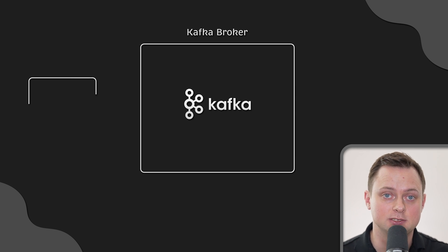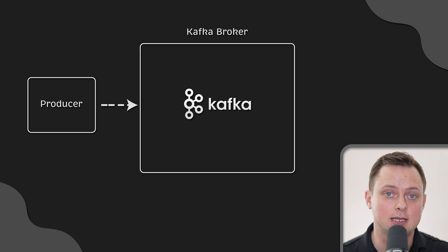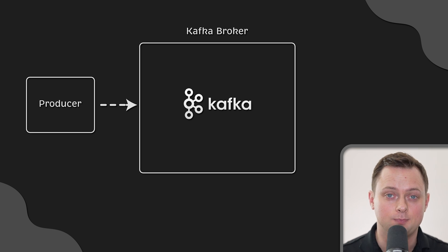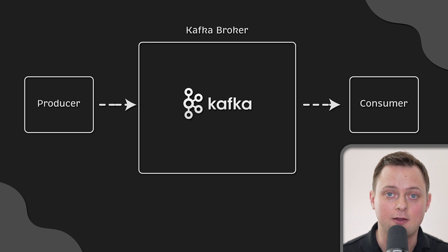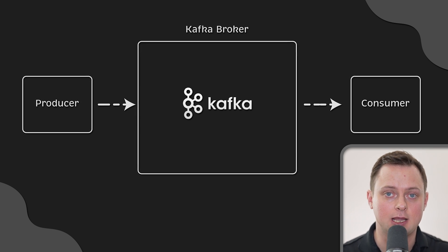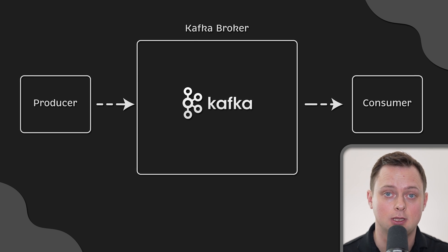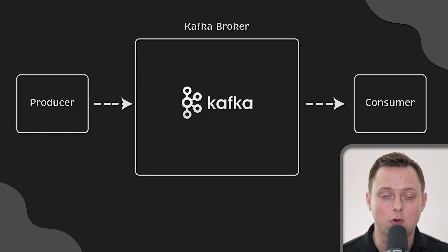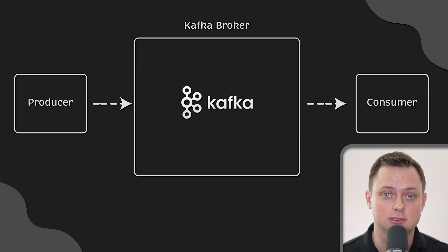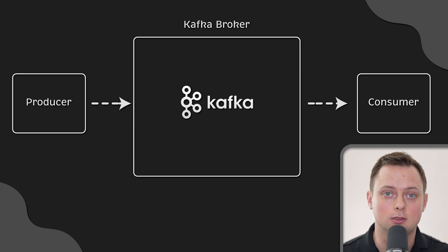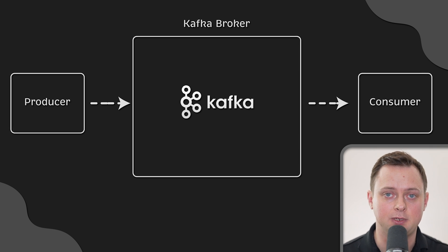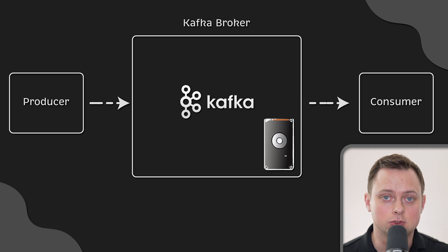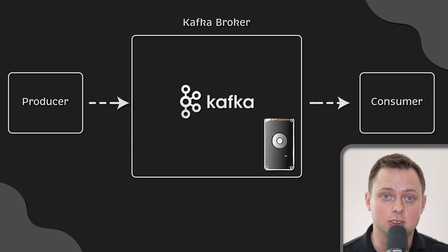A broker is a single Kafka server. Kafka brokers receive messages from producers, assign them offsets, and commit the messages to disk storage. An offset is a unique integer value that Kafka increments and adds to each message as it's published. Offsets are unique for each partition and are critical for maintaining data consistency in the event of failure or outage. For example, if the consumer fails and is restarted, it will return to the last consumed message — that's the default behavior. Since Kafka writes every single message to local disk, to increase performance make sure you attach fast SSD disks to Kafka brokers.